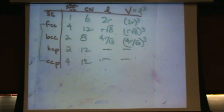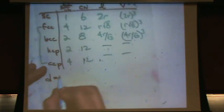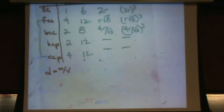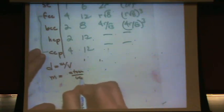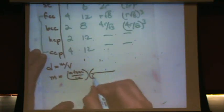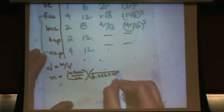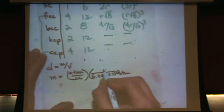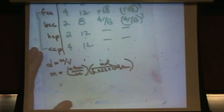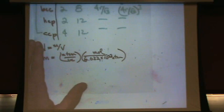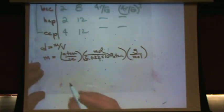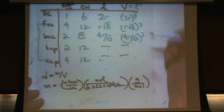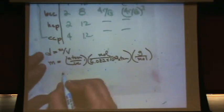A couple other things you have to know. To do a density problem, you have to know the formula for density. Mass always follows this approach: if you know the atoms per unit cell, you divide by Avogadro's number — 6.022 × 10²³ atoms per mole — giving you moles per unit cell. Then multiply by the molar mass to get grams per unit cell, which is the unit you want for mass. For volume, you just use the volume column.